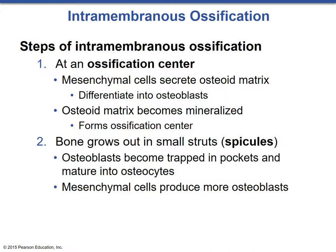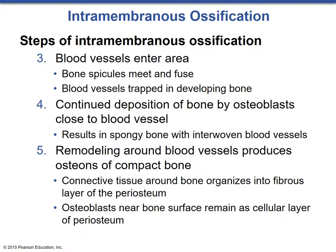There may be more than one ossification center in any developing dermal bone. From here, bones will grow out into small struts called spicules, which are the formations of trabecular bone. As this occurs, osteoblasts become trapped in the matrix they've secreted and mature into osteocytes. Blood vessels then grow along the spicules, the bone spicules meet and fuse, and blood vessels become trapped in the developing bone. There is continued deposition of bone by osteoblasts closing around the blood vessel, resulting in spongy bone interwoven with blood vessels. Remodeling continuously occurs, and the spongy bone becomes compact bone over time.